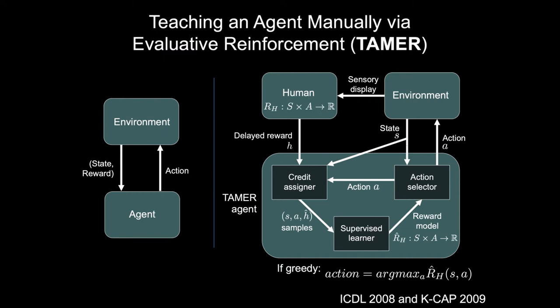The supervised learner can be really any regression algorithm, and it outputs a reward model that the action selector uses to select actions. The action selector says: here's my state, and for every possible action, I'll query the reward model learned so far — whichever action is predicted to get the highest human feedback value is the action taken. The action selector is greedy with respect to predictions of human feedback. The need for algorithmically driven exploration is much lower with TAMER because the human trainer can give negative feedback to actions they don't want to see, driving exploration.